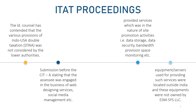The assessee filed an appeal before CIT(A). The CIT(A) dismissed the appeal, holding that the payment made is a fee for technical services and squarely covered under Explanation 2 to Section 9(1)(7) of the Act. During the course of appellate proceedings before the ITAT, the learned counsel submitted a paper book containing copies of documents and submissions. The counsel contended that the various provisions of the Indo-USA double taxation treaty were not considered by the lower authorities. The assessee was engaged in the business of web designing services, social media management, etc.